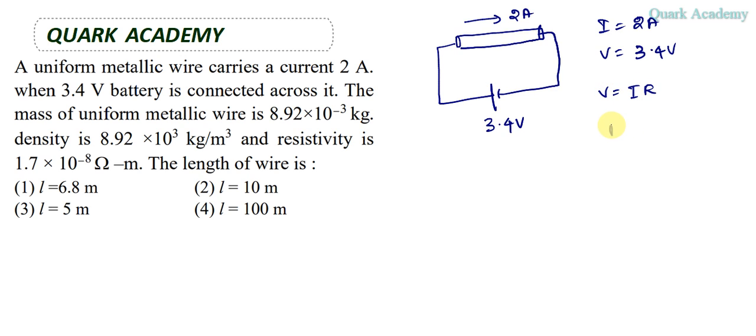From Ohm's law, V = IR, so R = V/I = 3.4/2. The resistance of the wire is 1.7 ohms. Additionally, several other parameters are given, including the mass of the wire.